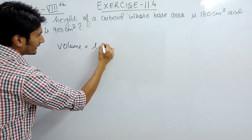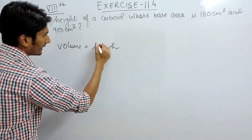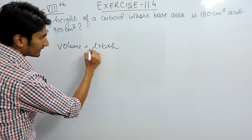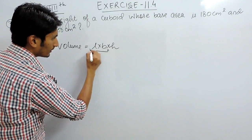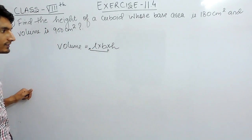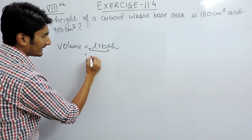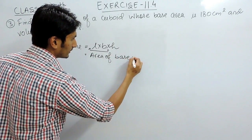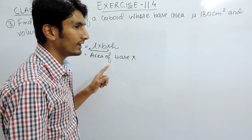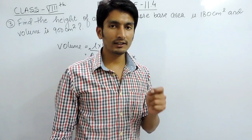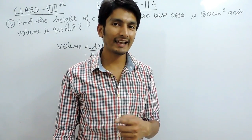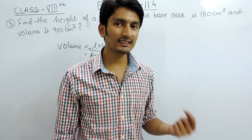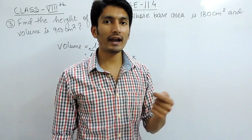The formula is length into breadth into height. In other words, it is length into breadth, which is basically the area of base. If you see in that room in which you are sitting, the base is a rectangular shape.